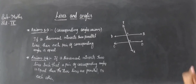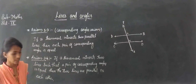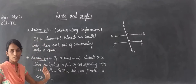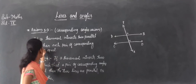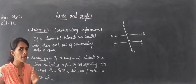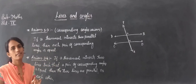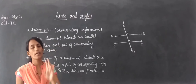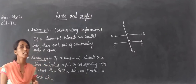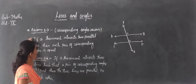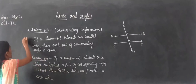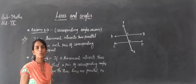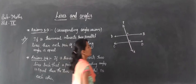Now, Axiom 3.3: If a transversal intersects two parallel lines, then each pair of corresponding angles is equal. This is called the Corresponding Angle Axiom and it is very important. The condition is that lines AB and CD must be parallel for the corresponding angles to be equal.